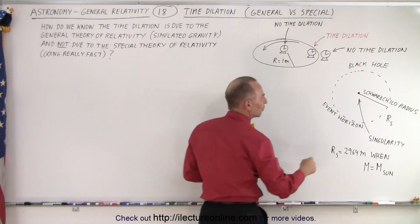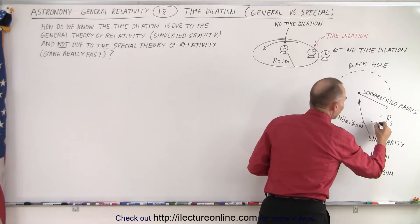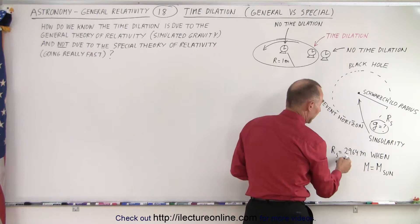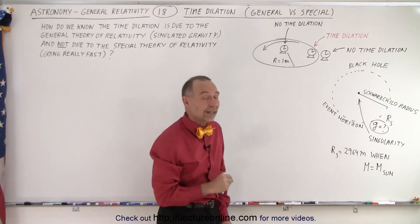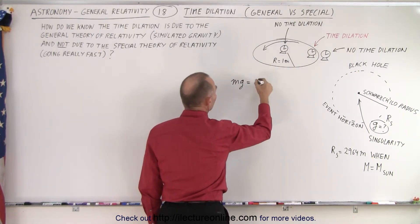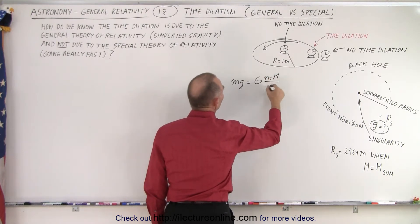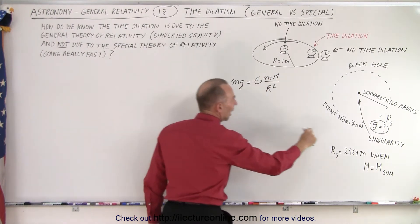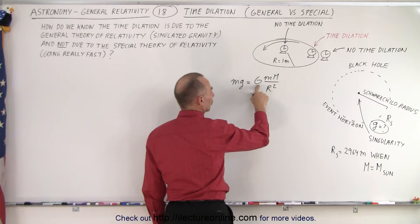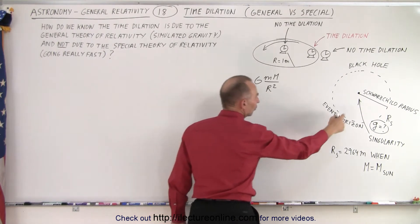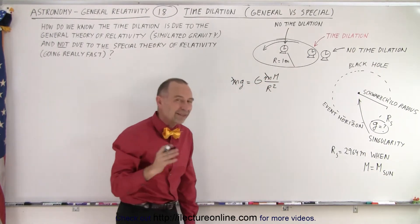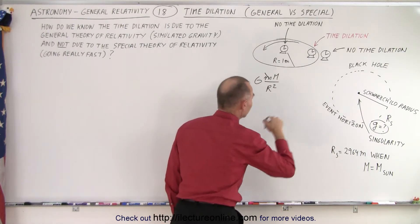We're going to figure out the acceleration due to gravity — what is g equal to at the event horizon if we had a black hole with mass equal to the mass of the Sun, so the event horizon radius would be 2,964 meters. We set mg equal to the gravitational force GmM/R². The mass cancels out on both sides, leaving us with the acceleration due to gravity at the event horizon.